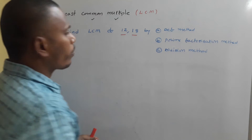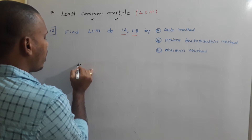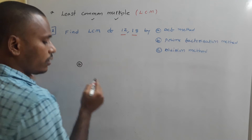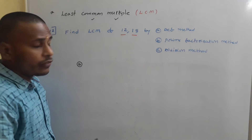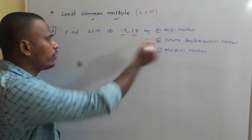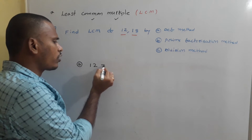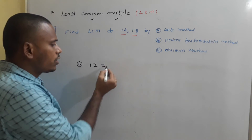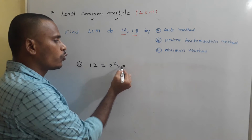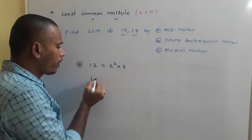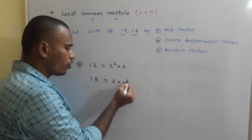Next, finding LCM by prime factorization method. As we discussed in the last class for HCF, here again we find LCM by prime factorization. First, prime factorize the numbers: 12 is 4 × 3, which is 2² × 3. Whereas 18 is 2 × 9, which is 2 × 3².